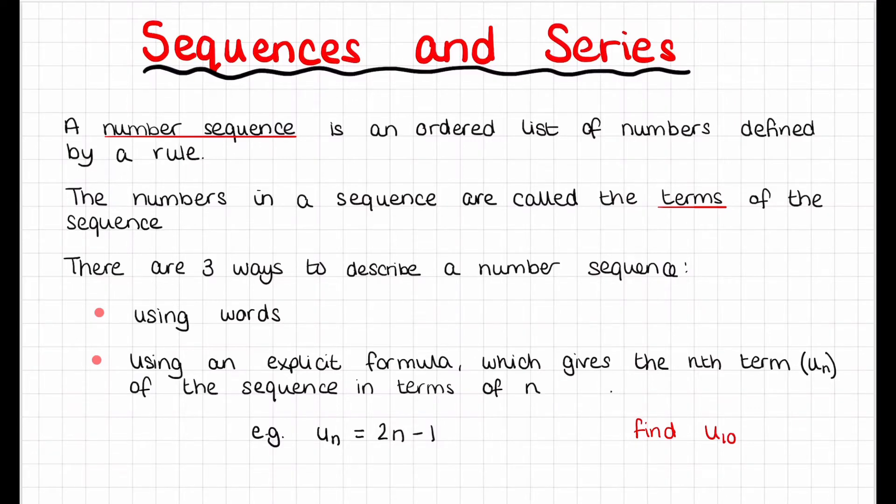For example, we've got un = 2n - 1, and I'll show you how this works. I've put a note to find u10.